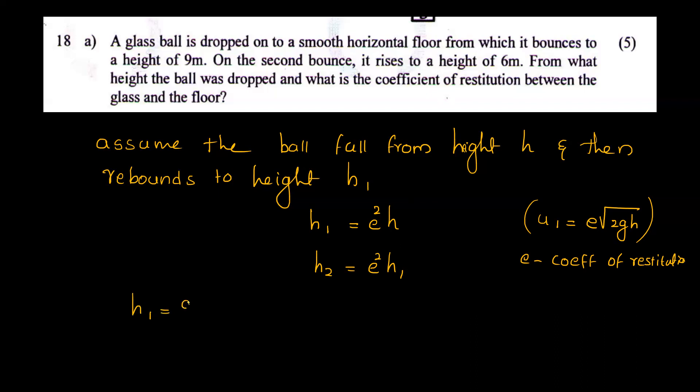For the 1st bounce height, we have a height of 9 meters. For the 2nd bounce height, we have a height of 6 meters.